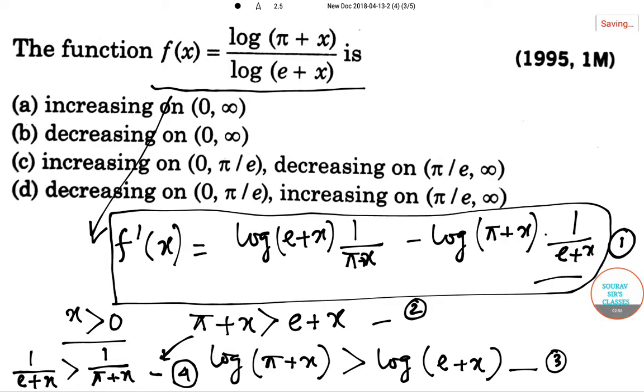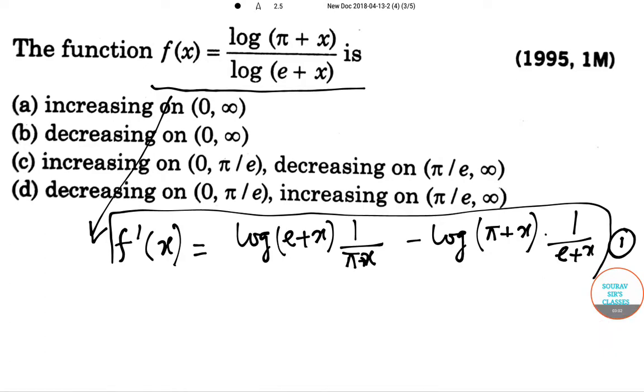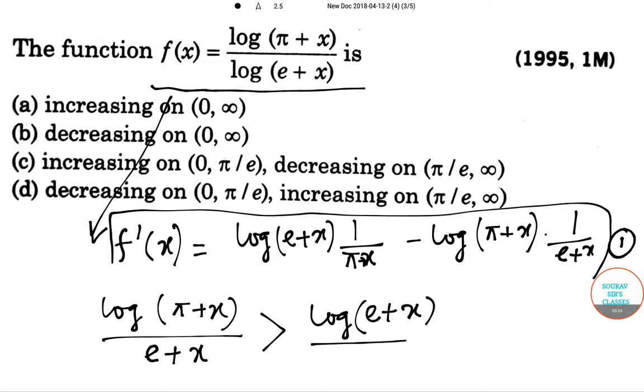If we multiply equation 4 and equation 3, we will get 1 divided by pi plus x times log of pi plus x divided by e plus x is greater than log of e plus x divided by pi plus x. Let us name it equation 5.